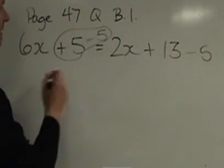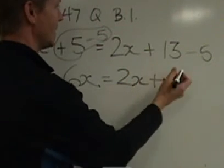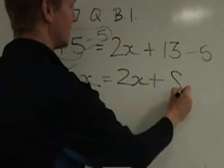So I have a positive 5 and a negative 5. That's nothing, and I'm left with just 6x on this side. This side still has 2x plus 13 minus 5, which is 8.